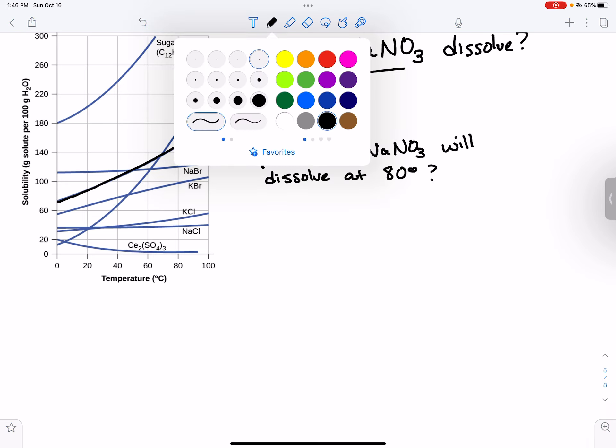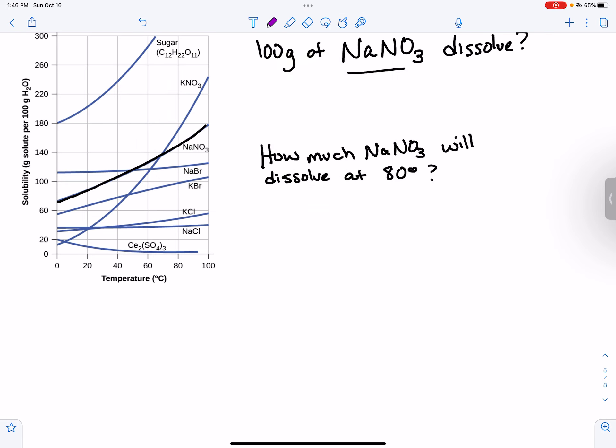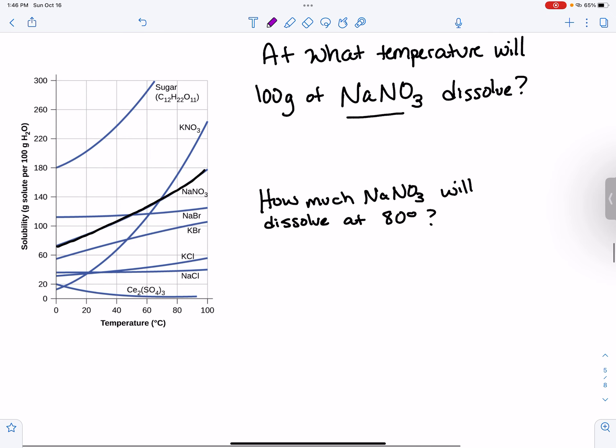And then I'm going to use a purple color to try to match up this and answer these two questions. So the first one is, at what temperature will 100 grams of NaNO3 dissolve? So notice that our unit is in grams per 100 grams of water, and it wants to dissolve 100 grams of NaNO3.